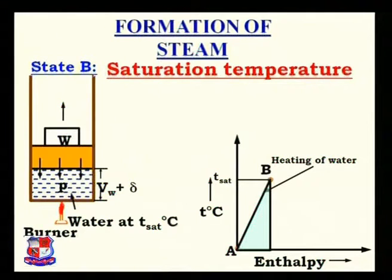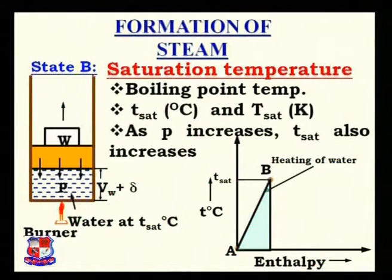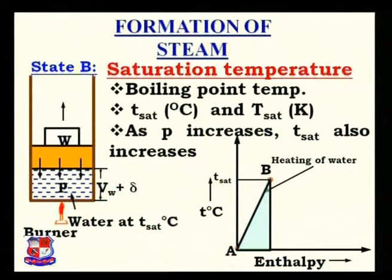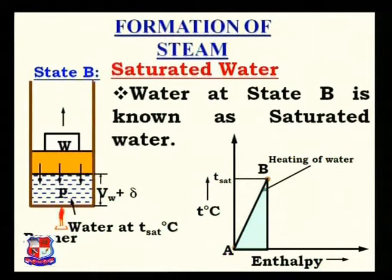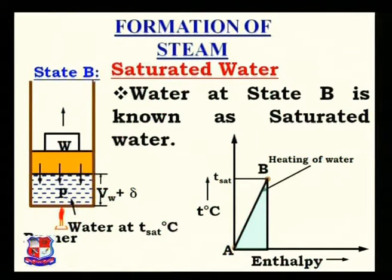The saturation temperature is the boiling point temperature of water. It is denoted by lowercase t_sat for degrees centigrade and capital T_sat for Kelvin. As we have studied, as pressure increases, saturation temperature also increases. The condition of water at state B is known as saturated water because that water is at the saturation temperature. If the water has a temperature below the saturation temperature, then it is known as unsaturated water or unsaturated liquid.